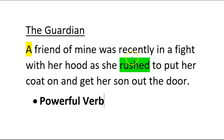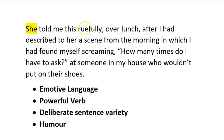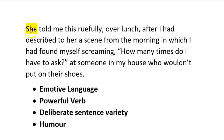Technique number one: the building blocks of your sentence are having powerful verbs. So instead of 'she went to put her coat on' or 'tried', she rushed — and you get this feeling of urgency, and that's what makes the verb a powerful one. 'She told me this ruefully' — ruefully means with regret — immediately using emotive language. 'After I had described to her a scene from the morning in which I had found myself screaming.' There you go — the powerful verb. So 'how many times do I have to ask' at someone in my house who wouldn't put on their shoes? You can see a deliberate sentence variety here. This is a really long one — a show-off sentence, I call it — where you show the examiner that you've got real control over detail in your sentences. This wasn't written for an examiner; it was written for a newspaper, The Guardian. And so they use exactly the same techniques.